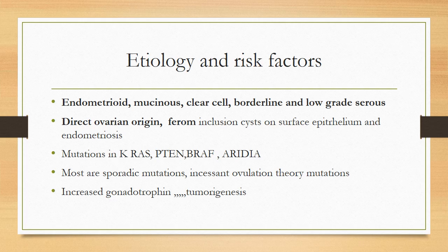In endometrioid, mucinous, and clear cell tumors, mutations are different from tubal P53 mutations — there are mutations in KRAS, PTEN, BRAF, and ARID1A. Most are sporadic. The incessant ovulation theory holds that when there is excessive ovulation, there is more injury to the surface epithelium, leading to proliferation and malignant transformation. Similarly, increased gonadotrophins used for ovulation induction also cause more damage to the surface epithelium and are tumorigenic.